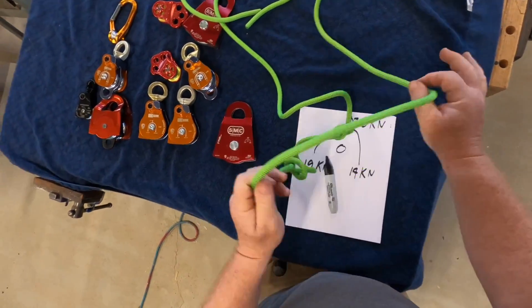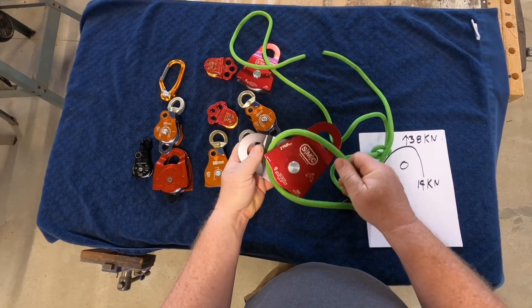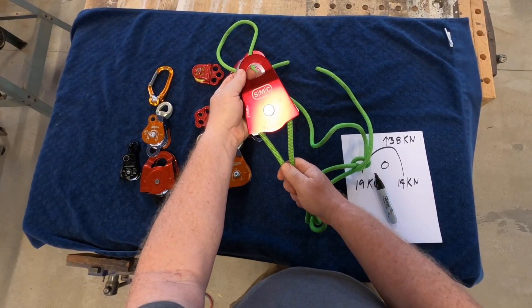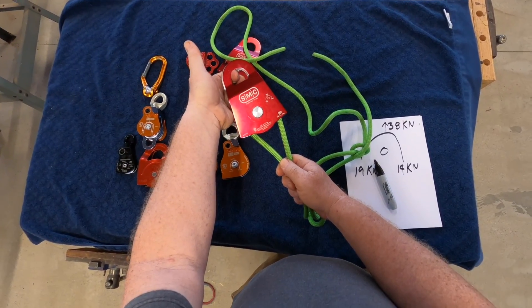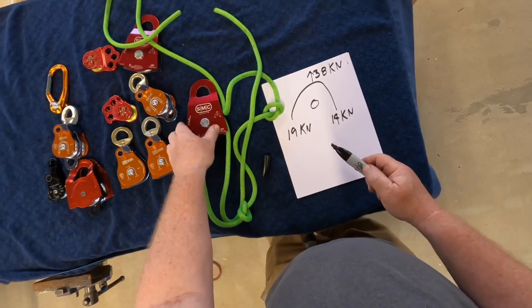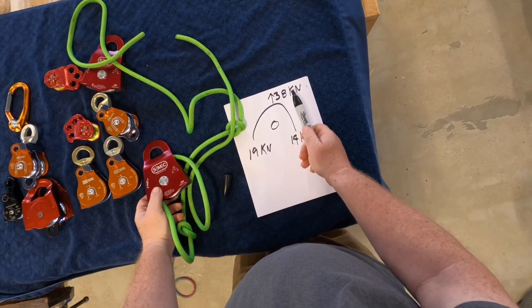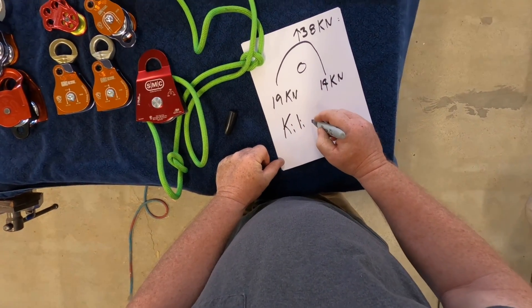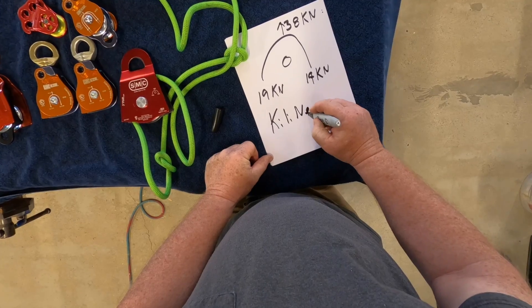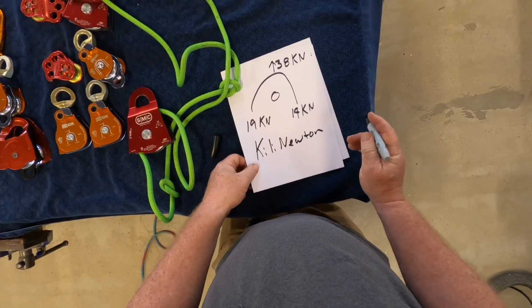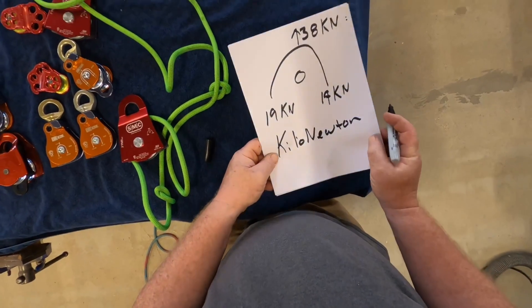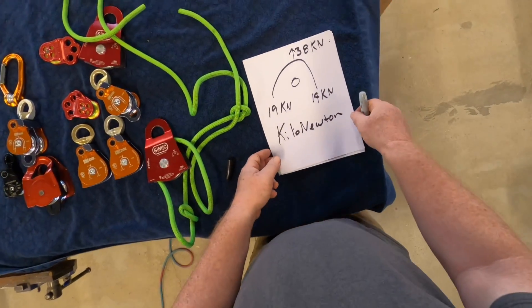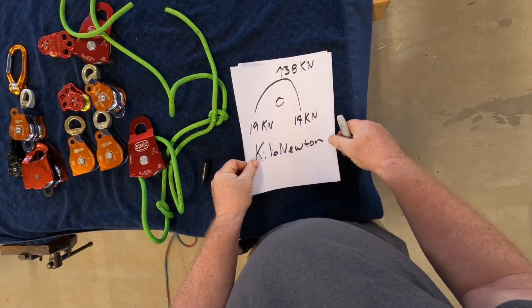And divided by two is going to be 19 on both sides. So what that means is, if I load this pulley like this and I'm pulling, each of these legs of this rope are going to equally share the force. And all this is saying is this pulley is rated for 38 kilonewtons. So KN is a kilonewton. So what is a kilonewton?